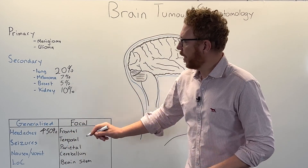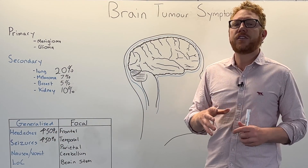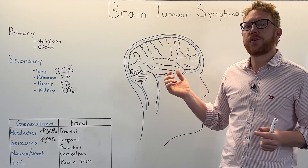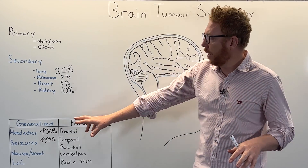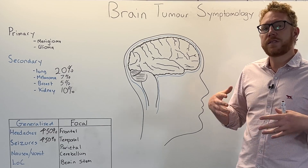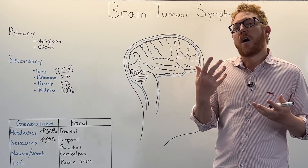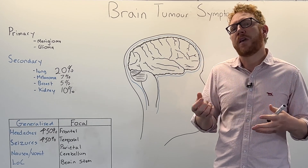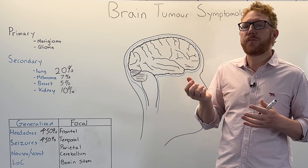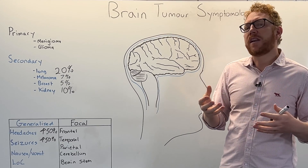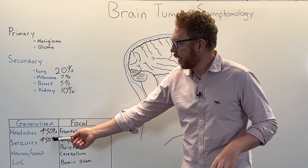Next we have seizures, with over 50% of patients experiencing them. Seizures are essentially abnormal electrical activity within the brain tissue, which can affect movement or behaviour. The generalised causes include changes in neurotransmitters or ions - such as sodium, potassium, and calcium - caused by the tumour, which alters how impulses are sent down neurons, increasing their excitability. Poor oxygenation through blood flow, or increased inflammation and swelling within the brain, can also lead to seizures.